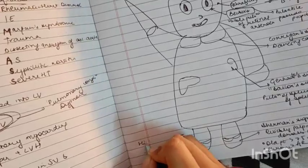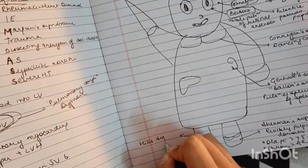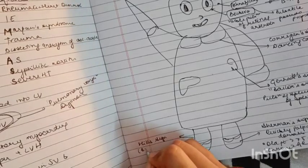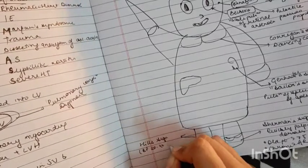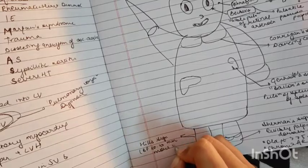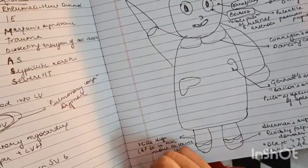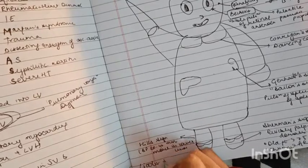Then over the limbs, we are reminded of Hill's sign. This is a sign in which the BP is 20 to 40 mm more in lower limbs. There can also be Lincoln's sign.